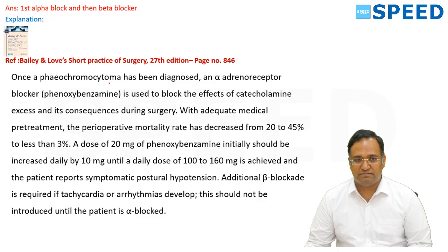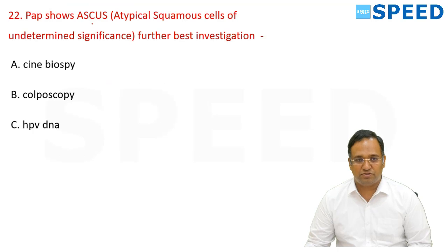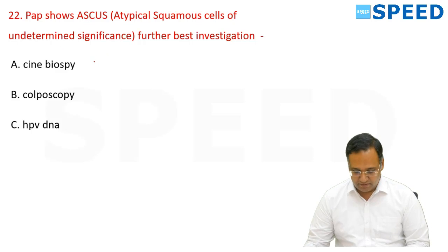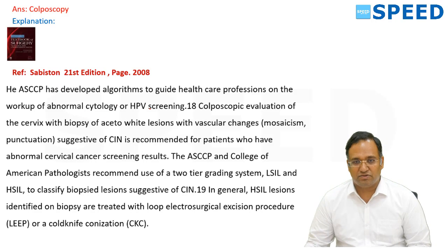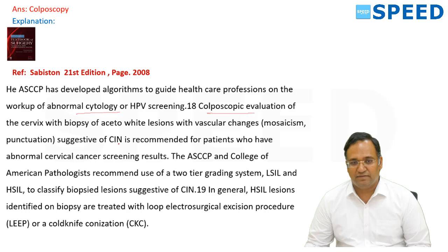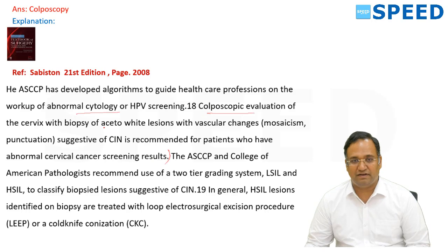Pap smear showing ASCUS (atypical squamous cells of undetermined significance) — the next step is colposcopic examination. As per Sabiston 21st edition, any abnormal cytology warrants colposcopic evaluation of the cervix with biopsy of acetowhite lesions with vascular changes, mosaicism, or punctation suggestive of CIN. Colposcopy is recommended for patients with abnormal cervical cancer screening results.